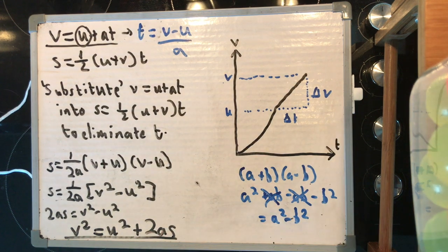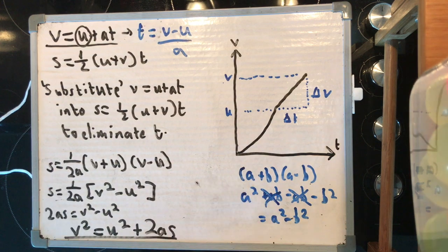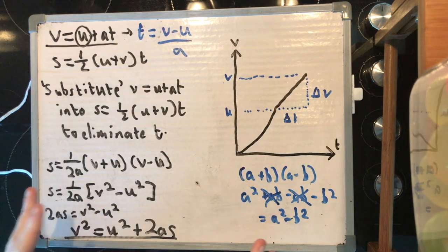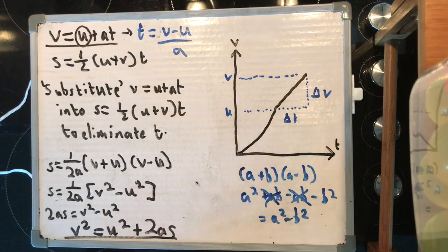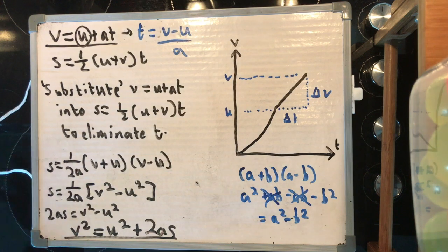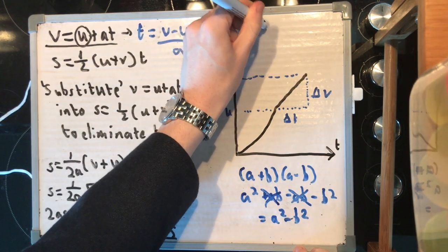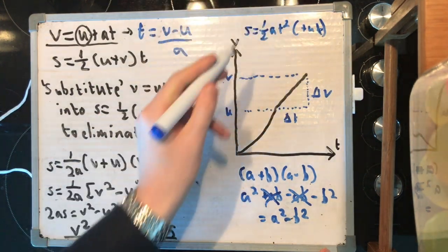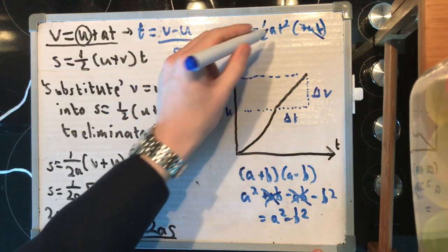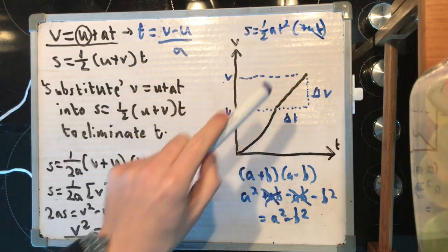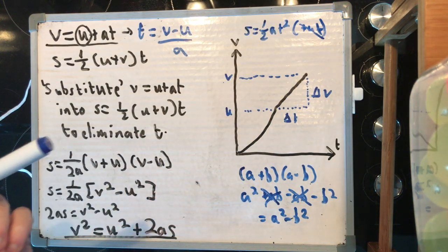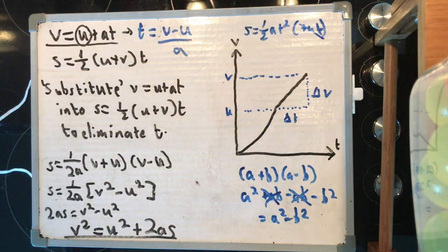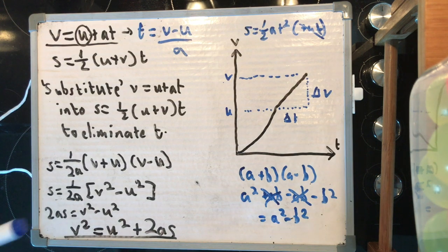And there you have it. I know I went very, very quickly, but that is the SUVAT equations, some of the most powerful equations of motion in all of modern physics, derived. Now, the history of them is very interesting. This equation, ut plus a half at squared, was actually derived by Galileo. He derived it for a falling object. So, this bit actually didn't exist, and acceleration was equal to gravity. But he derived this back in 15-something. And then it was the work, I believe, of Newton, Leibniz, Descartes, and others, who would create the other SUVATs going forward. It's a really interesting little bit of history, even though I don't know it all that well.